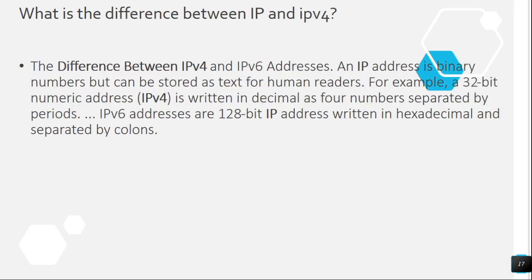Question 16: What is the difference between IP and IPv4? The difference between IPv4 and IPv6 addresses: an IP address is binary numbers but can be stored as text for human readers. A 32-bit numeric address (IPv4) is written in decimal as four numbers separated by periods. IPv6 addresses are 128-bit IP addresses written in hexadecimal and separated by colons.